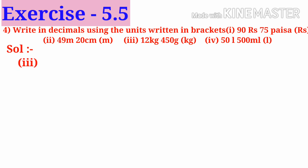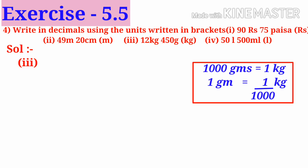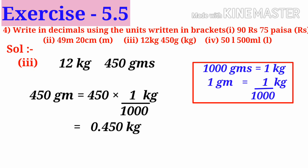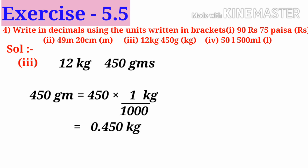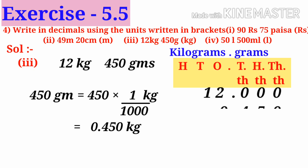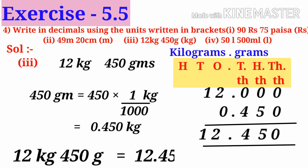Number 3: 1000 grams makes 1 kilogram, so 1 gram is 1/1000th of a kilogram. To convert grams into kilograms, divide by 1000. In 12 kilograms 450 grams, 450 grams divided by 1000 equals 0.450 kilograms. Place in exact values: 12.000 plus 0.450. Adding gives 12.450 kilograms. So 12 kilograms 450 grams equals 12.450 kilograms.